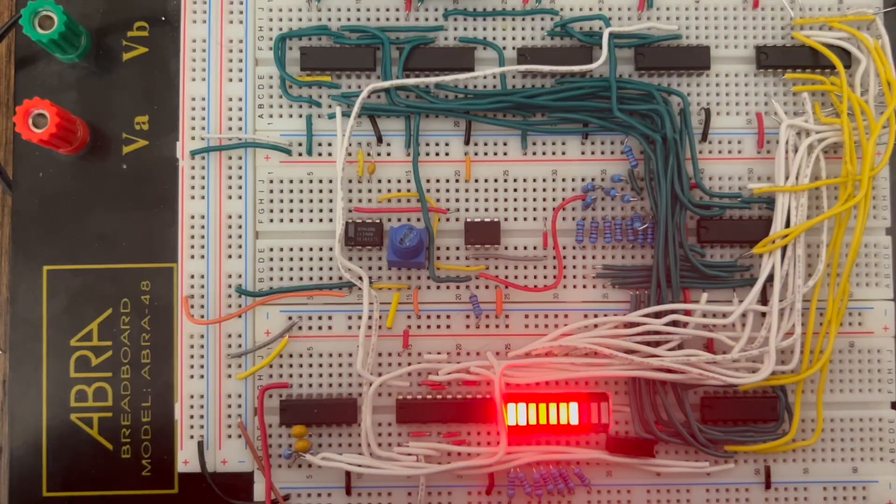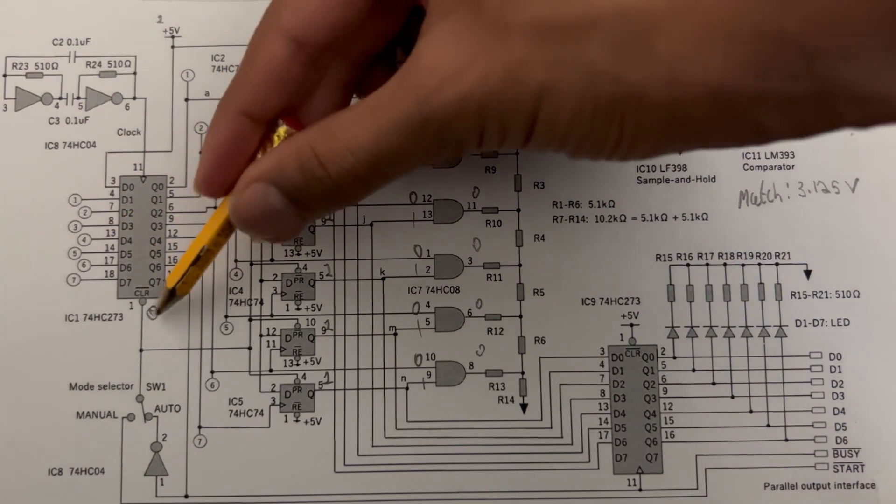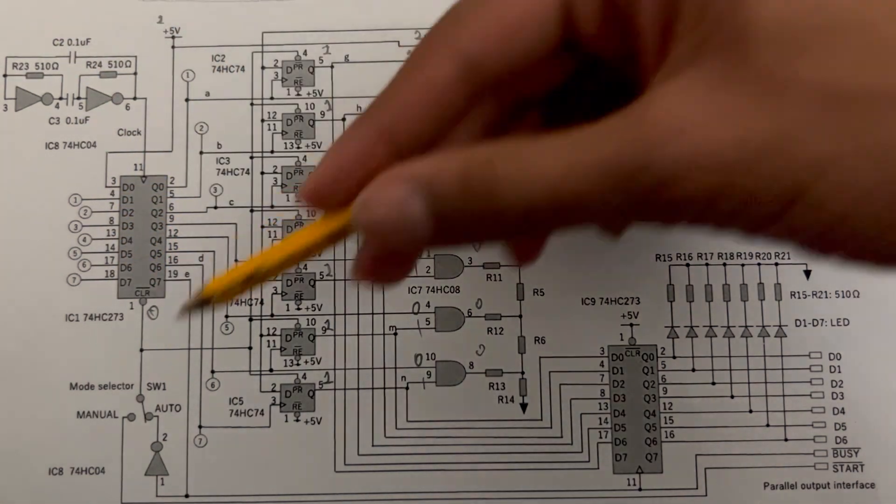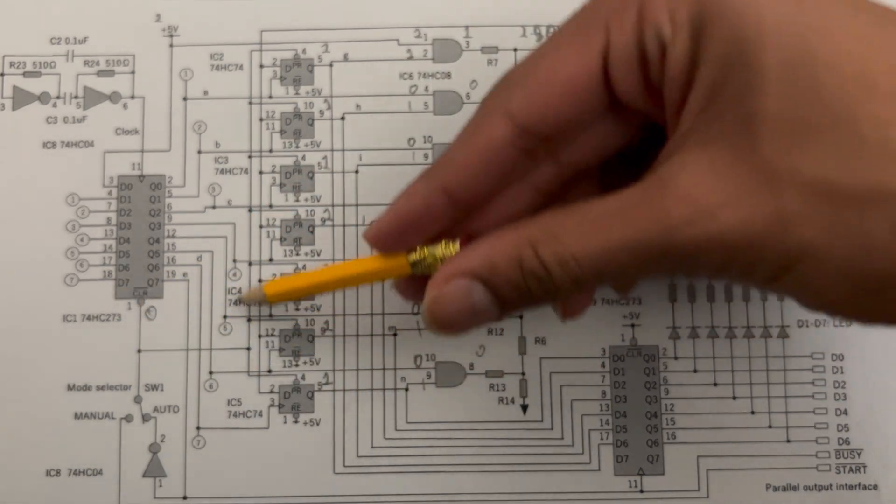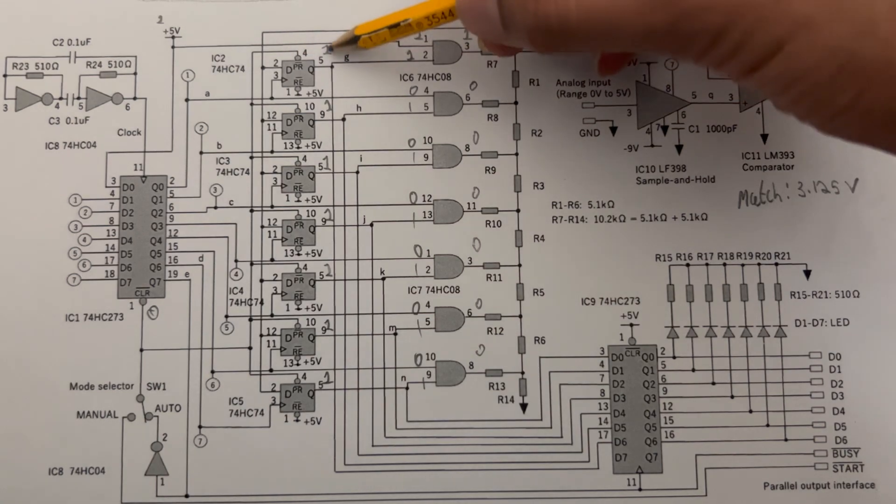Now let's talk about how the entire thing works. Let's say we want to match 3.125 volts. First, there is a zero on the clear pin of the 74HC273, and as it's connected to the presets of all the D flip-flops, those will be low as well, thus making the output, the Q, into 1.